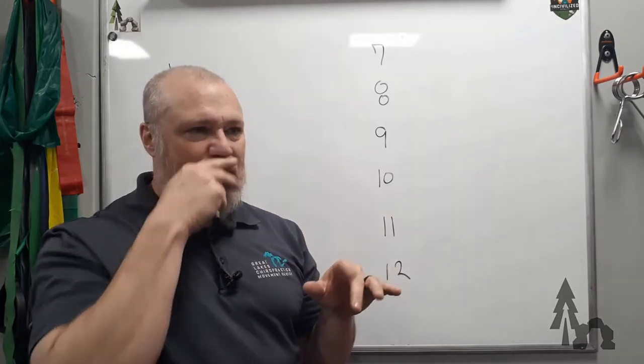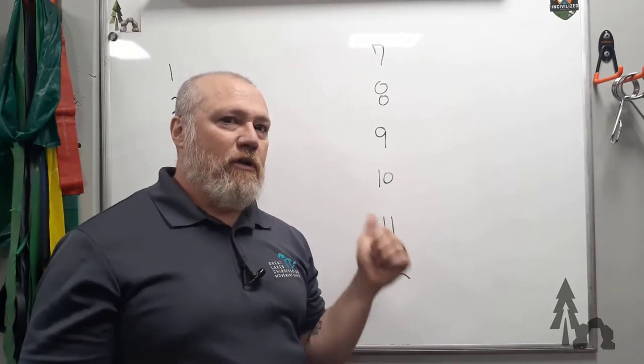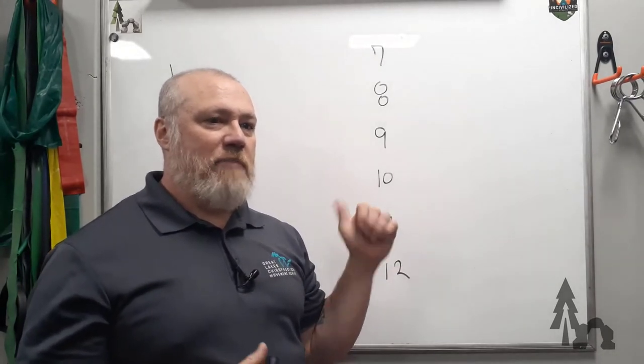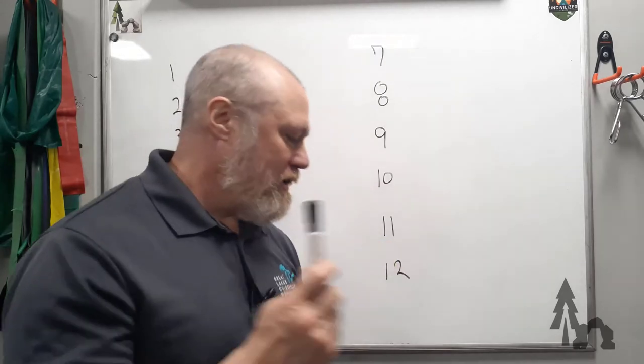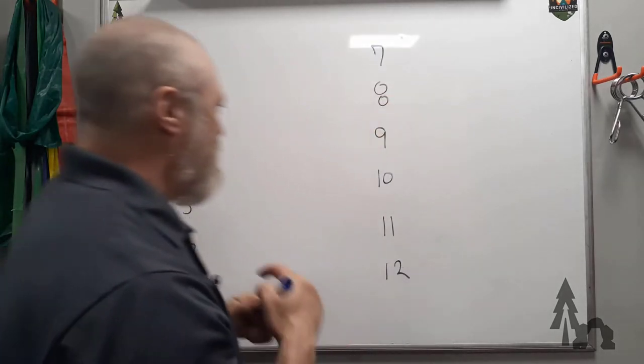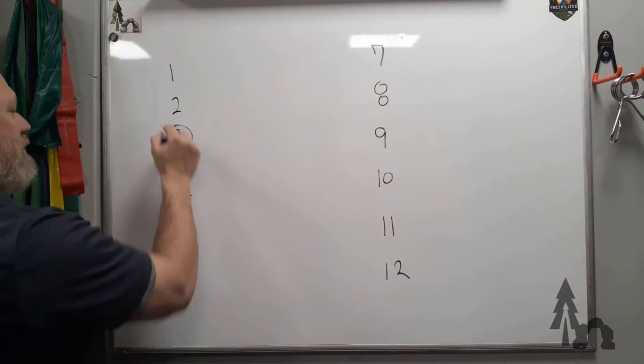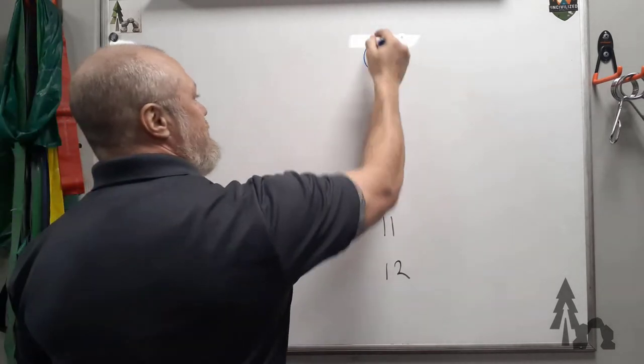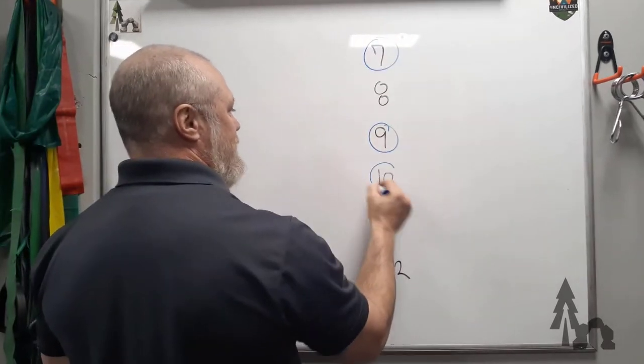You'll also want to know which ones carry parasympathetic fibers. We'll get that one out of the way right now: parasympathetic fibers are going to be 3, 7, 9, and 10. The circle will be your parasympathetics.